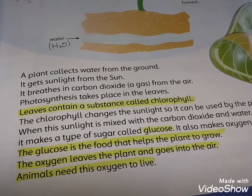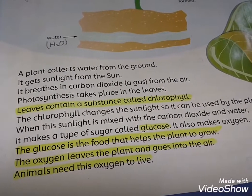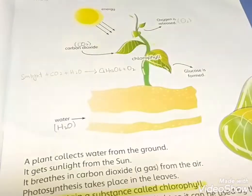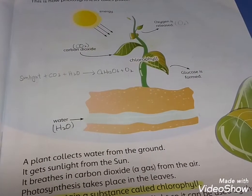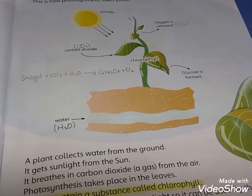The oxygen leaves the plant and goes into the air. Animals need this oxygen to live. So students, this is how photosynthesis takes place. Draw this diagram into your notebook.